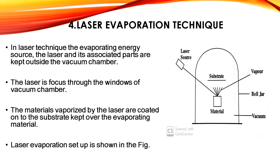The next method is the laser evaporation technique. In this technique, the evaporating energy source — the laser and its associated parts — are kept outside the vacuum chamber. The laser is focused through the windows of the vacuum chamber, and the materials evaporated by the laser are coated onto the substrate kept above the evaporating material, as shown in the figure. In contrast, for electron beam evaporation and resistive heating, the source and associated parts are kept inside the vacuum chamber.